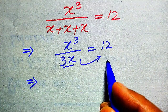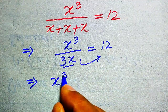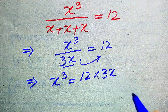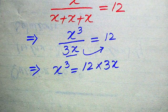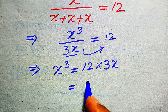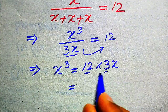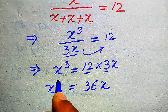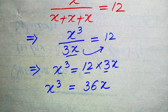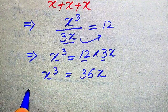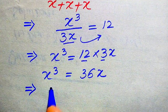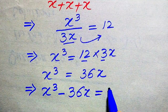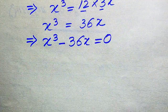We move 3x from the left-hand side to the right-hand side — it becomes a multiplier — giving x cubed equals 12 multiplied by 3x. Multiplying 12 and 3 gives 36x, so we have x cubed equals 36x. Moving 36x to the left gives x cubed minus 36x equals zero.